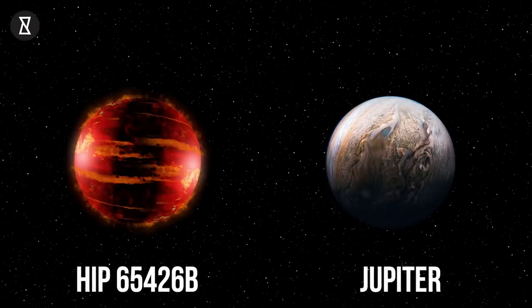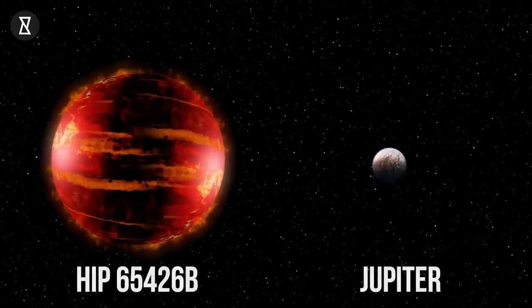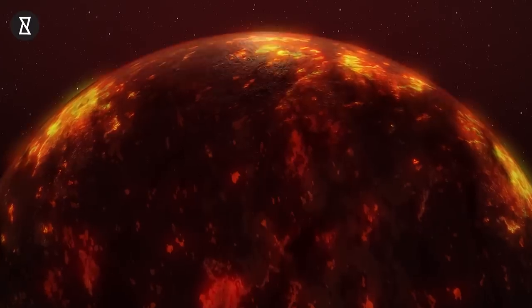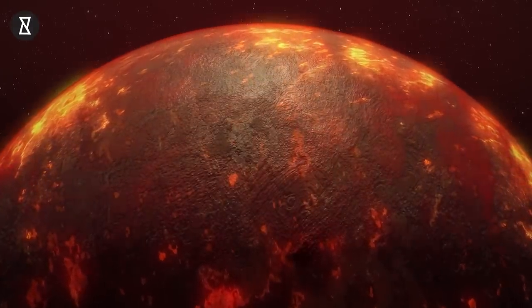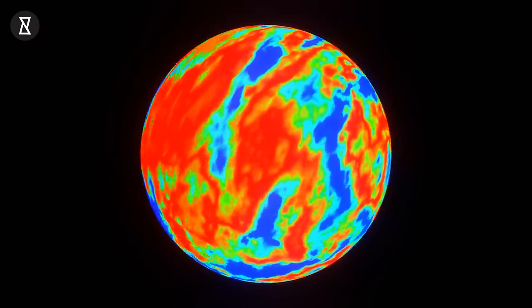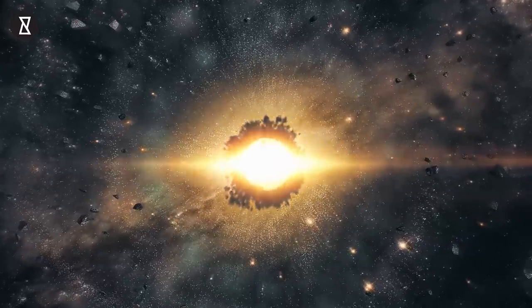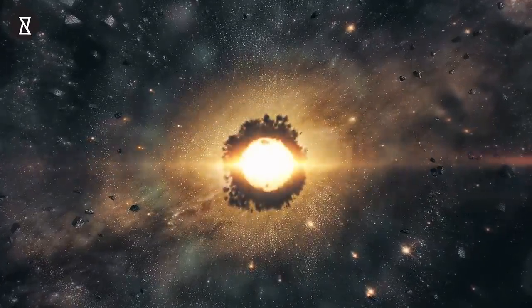Next, the exoplanet is a behemoth of a world, thought to be several times the mass of the solar system's biggest planet, Jupiter. On top of that, it was also previously found to be remarkably hot, with temperature at its cloud tops measuring at least 1,200 degrees Celsius. This combination of the planet's size and temperature means it is intrinsically bright for a planet.